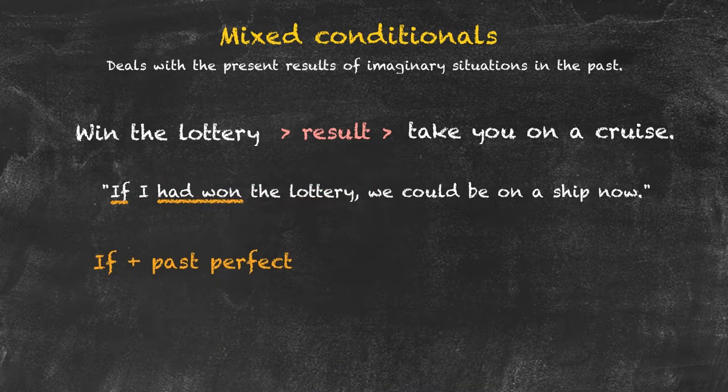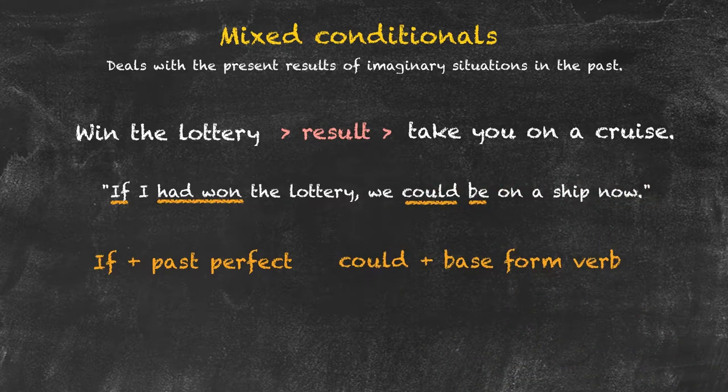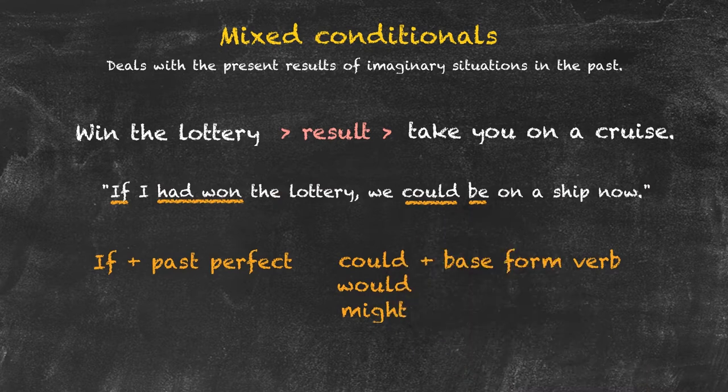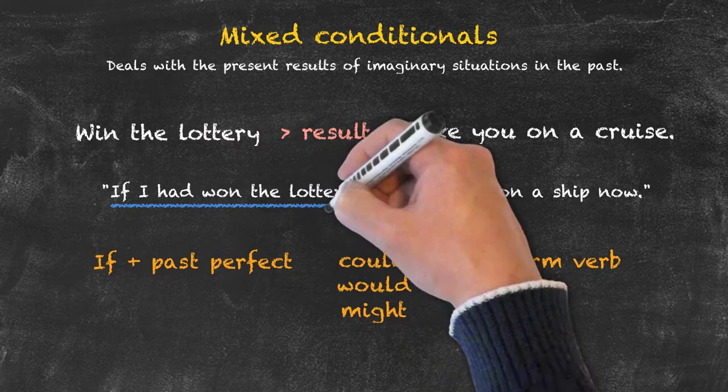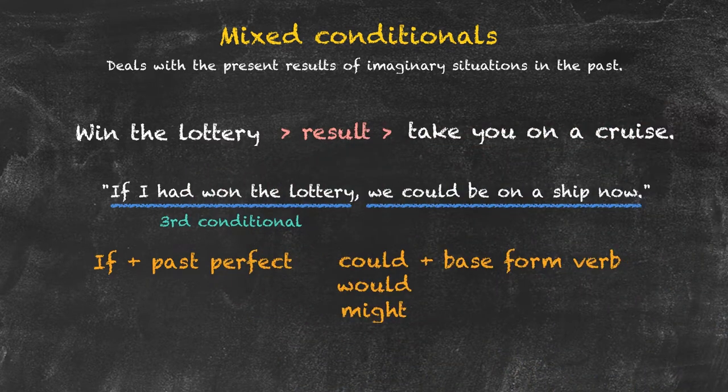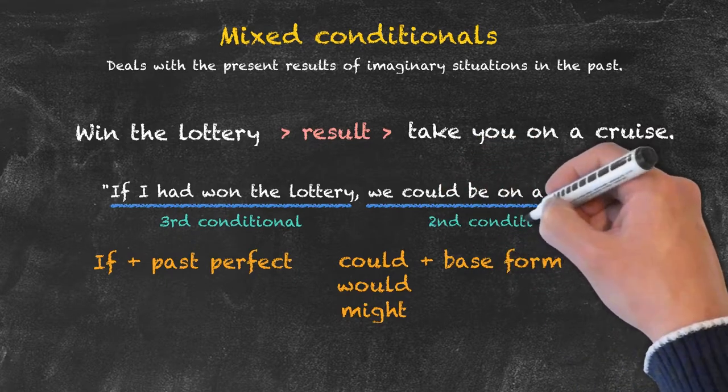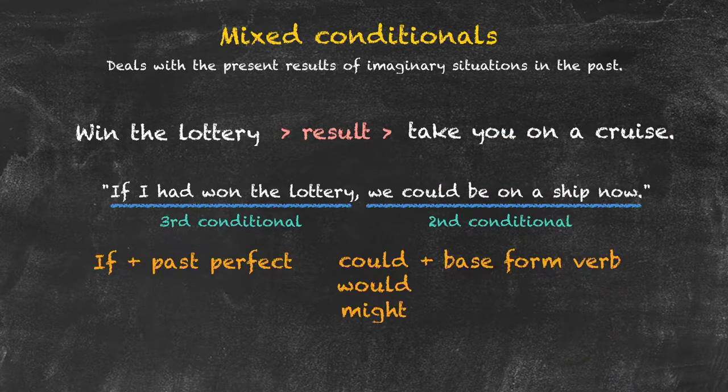Followed by could plus the base form, would, or might. If we look at the structure of this, we can see that the first clause is a third conditional and the second clause is the same as the second conditional. That is why it's known as the mixed conditional. It's a mix of the second and the third conditionals.